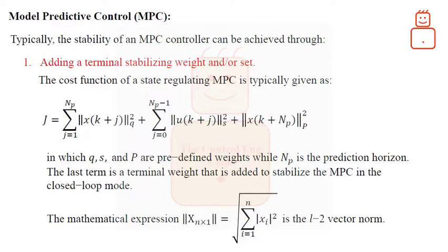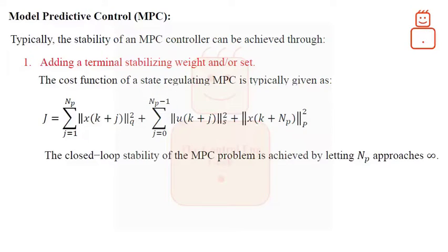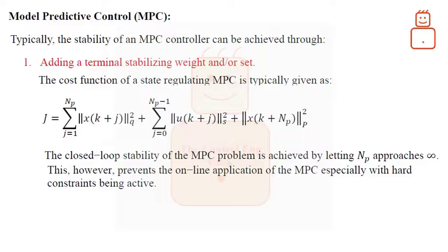The mathematical norm of the vector X is just a typical L2 vector norm. Now let us get closer to the MPC stability with the horizon. The closed loop stability of the MPC problem is achieved by letting the horizon N_p approach infinity. This, however, prevents the online application of the MPC as the online computation time is very large, especially when the controlled process has big dynamics and hard constraints being active.